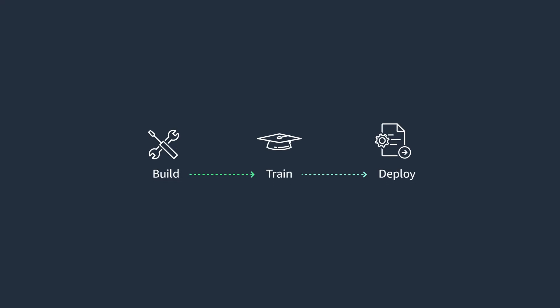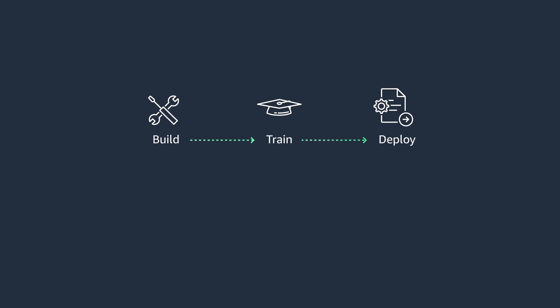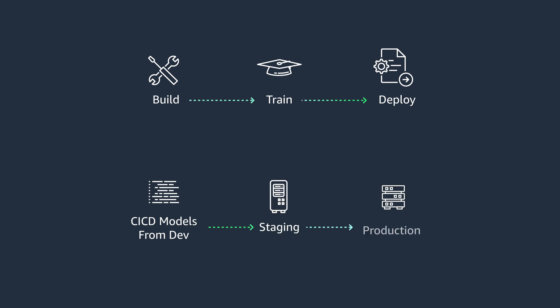Now that you have an understanding for MLOps and the challenge to implement one, let's dive deep on the architecture that Amazon SageMaker uses to set one up. Our setup consists of two distinct architectures. The first part encompasses the model build, train, and deploy lifecycle, and the second part is about model propagation to staging for tests and validation before promoting to production. Let's look at each architecture closely.